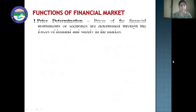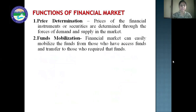First is price determination. Prices of financial instruments or securities are determined through the forces of demand and supply in the market. Then funds mobilization — the financial market can easily mobilize funds from those who have excess funds and transfer them to those who require funds. So the financial market acts as a link between savers and those who require their funds.